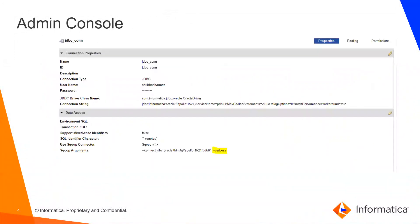If we are doing this from the admin console, this screenshot shows how we can enable --verbose. We log into the admin console, go to the JDBC connection, and put --verbose in the Sqoop arguments as shown. This will enable verbose and print all the additional logging in the mapping log.